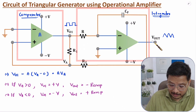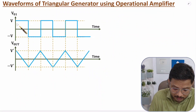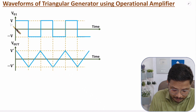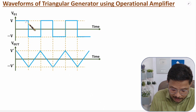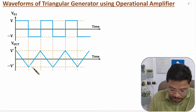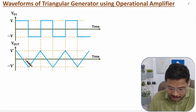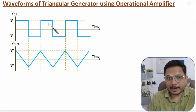Now let us understand this with waveforms. At V01 we have a square wave oscillating between V and minus V. Based on that, we have a triangular wave at the output: when V01 is plus V, the output is a negative ramp, and when V01 is minus V, the output is a positive ramp. That is how the triangular wave is generated from the square wave.